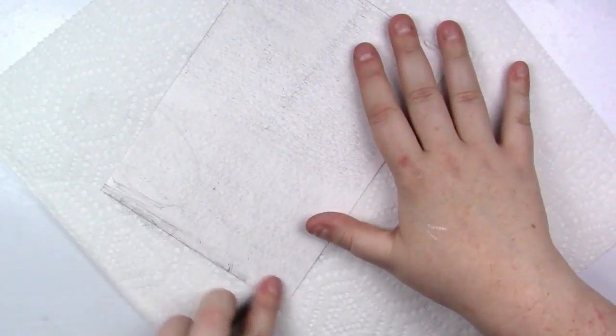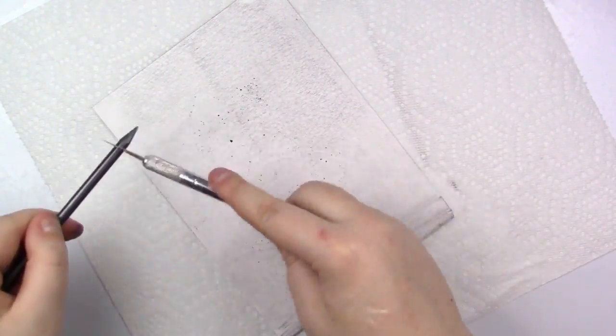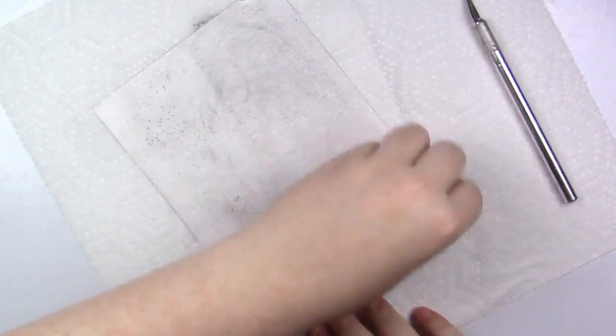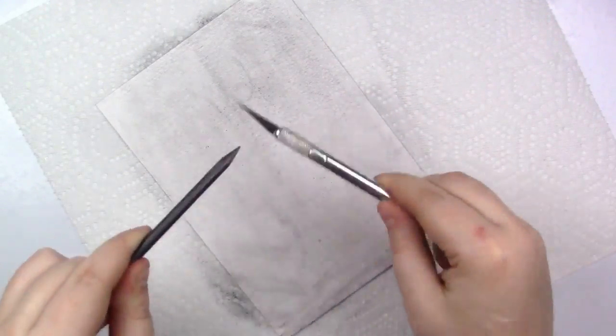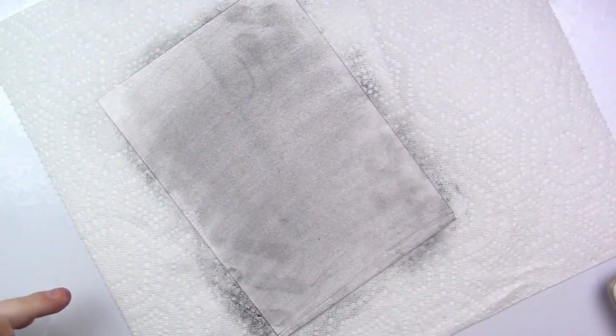I took an exacto knife and I scraped the graphite onto the paper and smoothed it out that way and I found that gave me such a great payoff as far as the smoothness was concerned and then again, I drew another eyeball.